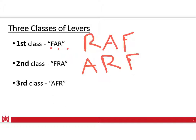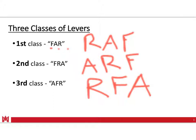And then the third class has the arrangement: Resistance, Force, Axis — or AFR. So any of those three variations apply, and I'll go through specific examples.